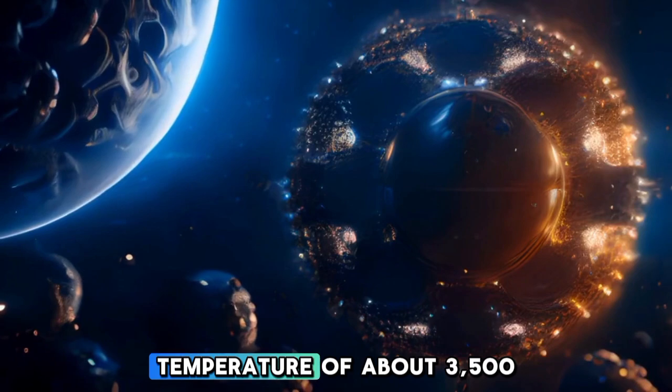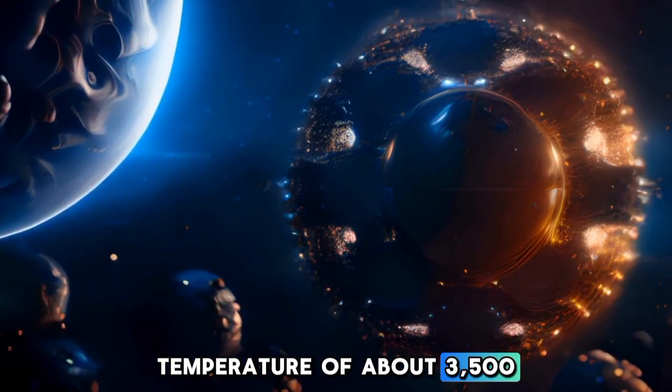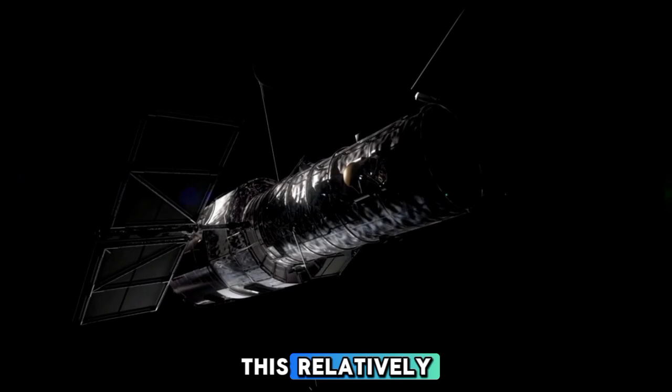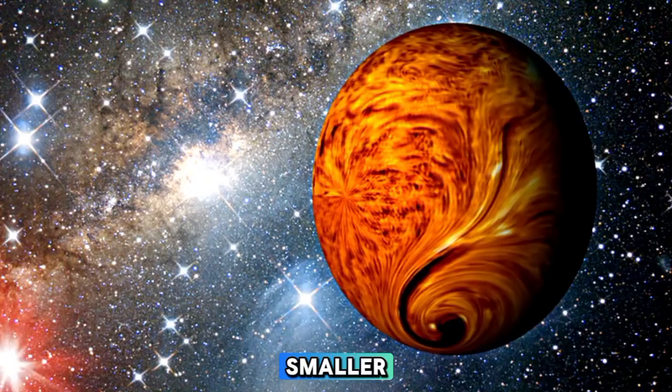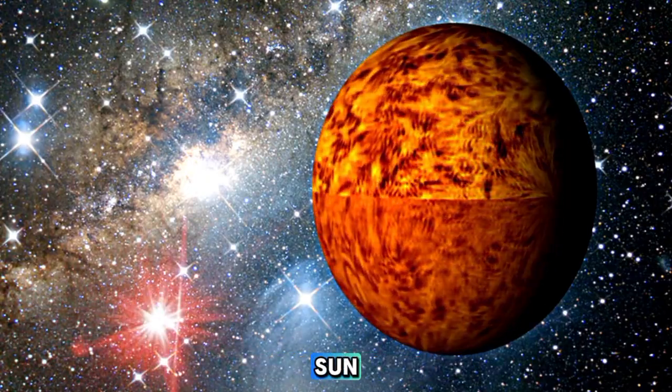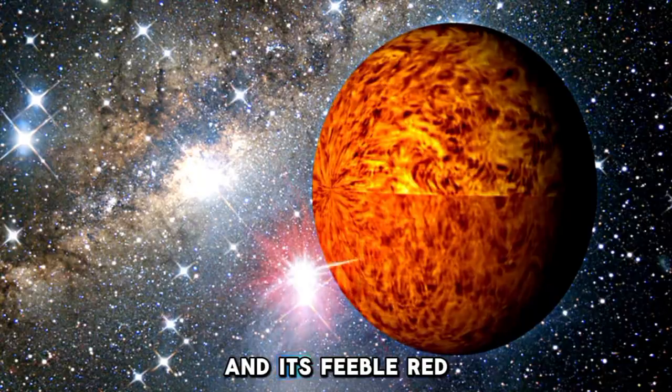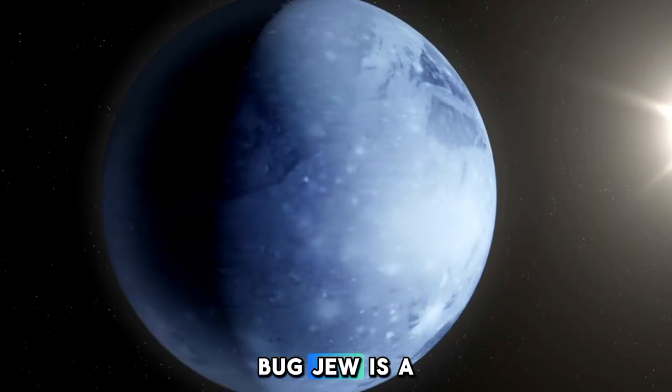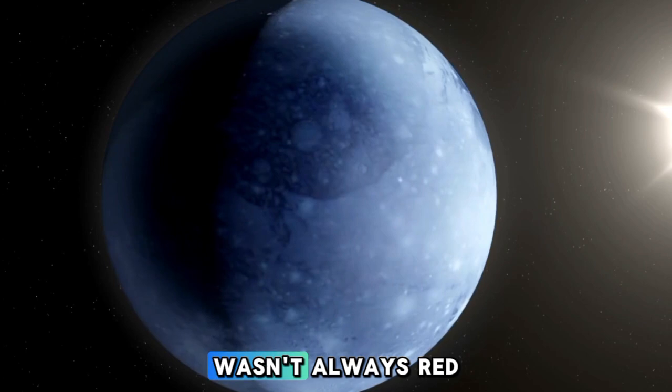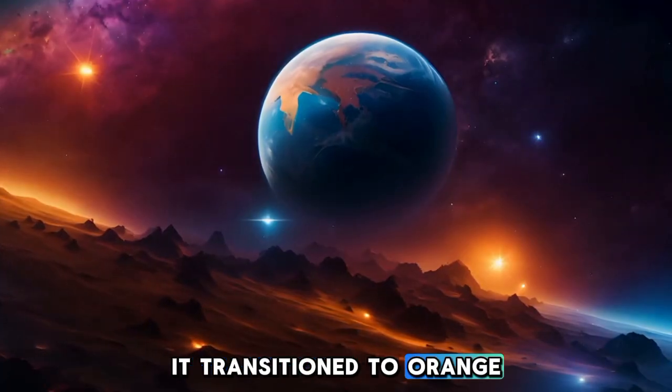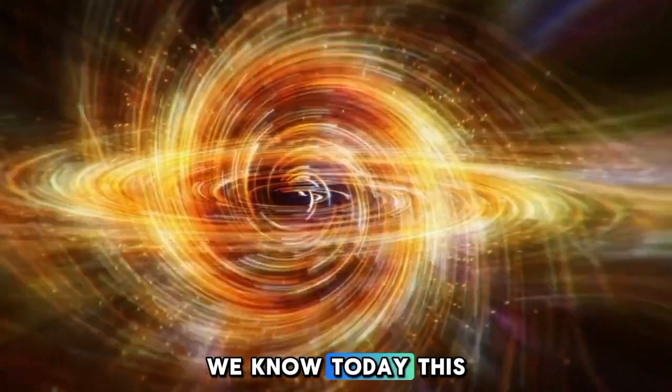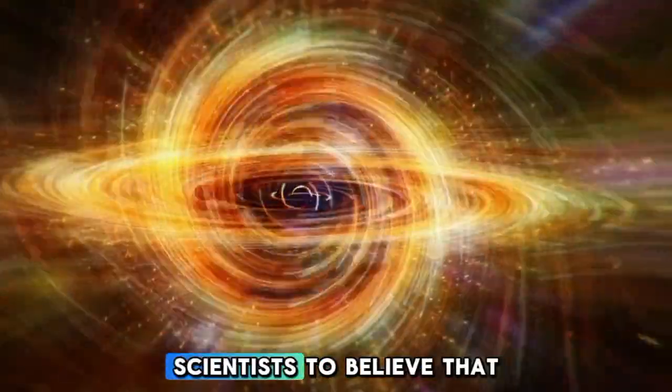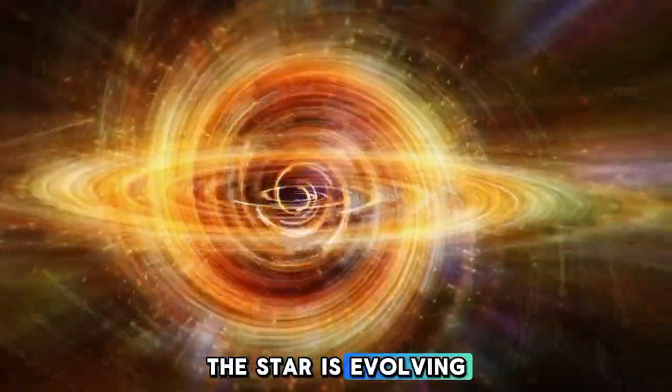Betelgeuse has a surface temperature of about 3,500 K. This relatively low temperature contributes to its lower energy output compared to smaller, hotter stars like the Sun. Betelgeuse is a red star. Yet, it wasn't always red, it transitioned to orange-red, and then, around quite a while back it slowly started changing into the red star we know today. This fact has led scientists to believe that the star is evolving.